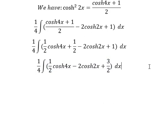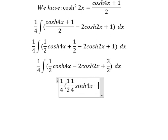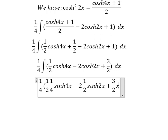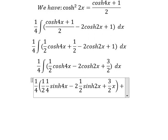And now we have the final answer. The integration of cosh4x we have 1 over 4 sinh4x. This one we have 1 over 2 sinh2x. This one we have 3 over 2x and we add C.